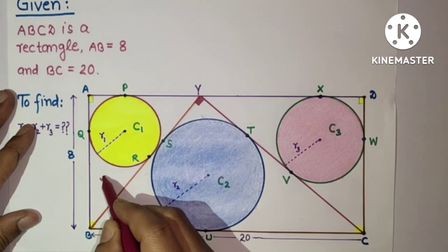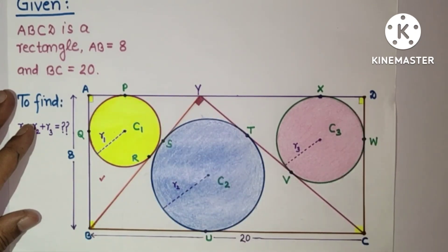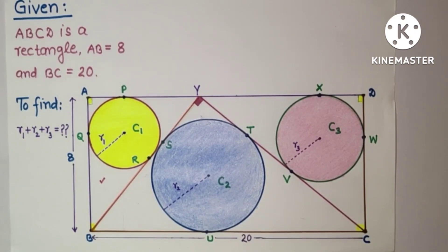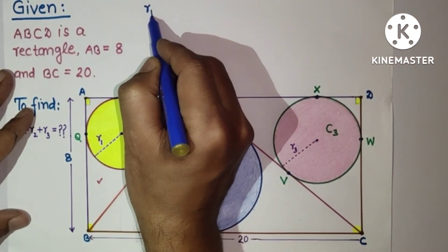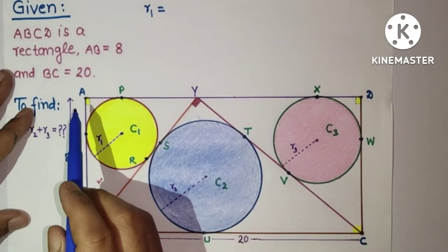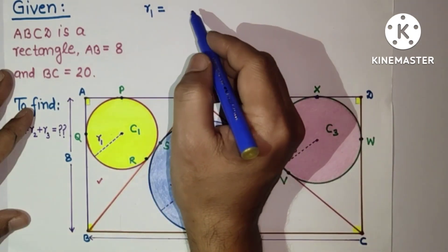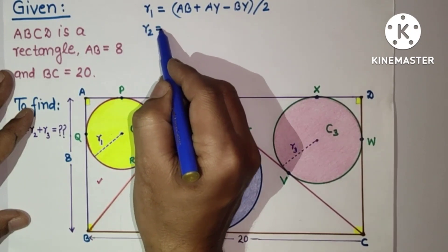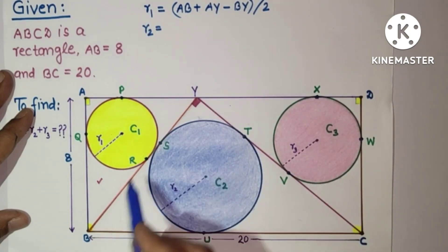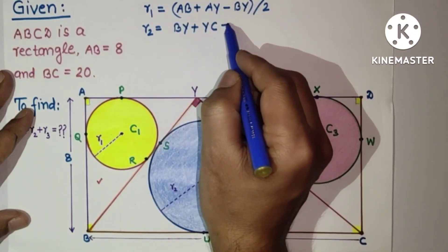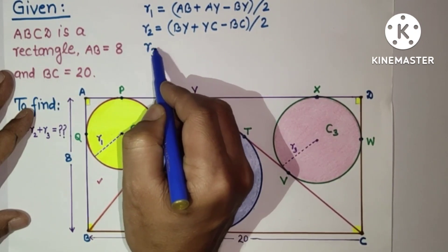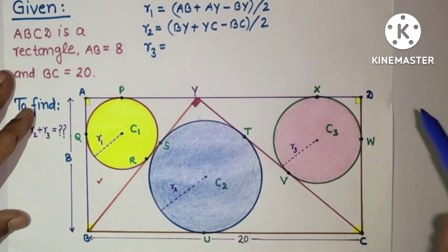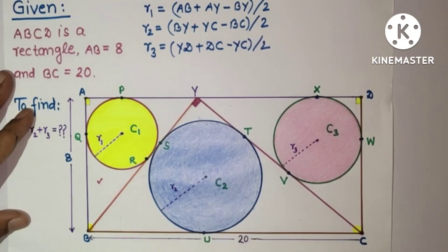For this question, each of the three triangles formed is a right angle triangle, so we apply the same condition. For r1: r1 = (AB + AY − YB) / 2. For r2: r2 = (BY + YC − BC) / 2, where BC = 20. For r3: r3 = (YD + DC − YC) / 2, where DC = 8.